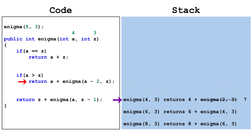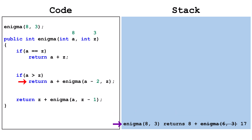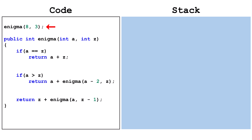The next call adds 7 to 4, returns 11, and pops the frame off the stack. The next call adds 11 to 6, returns 17, and pops the frame off the stack. Finally, this call adds 17 to 8 and returns 25. The initial call enigma(8, 3) has returned 25.